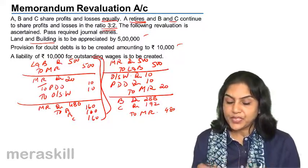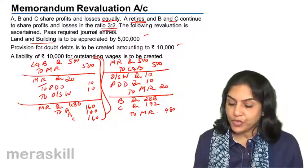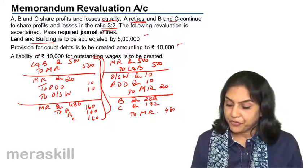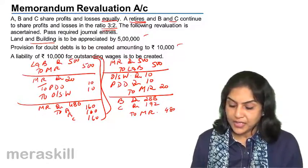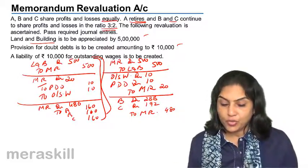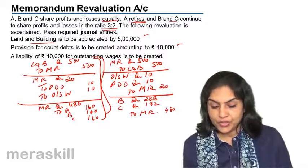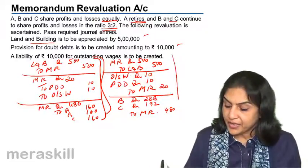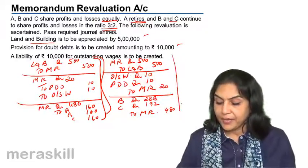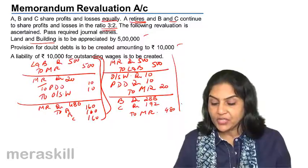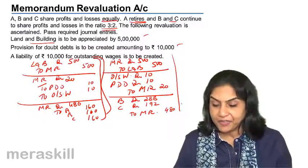With this, we see that the land and building value is offset, provision for doubtful debts and outstanding wages are all closed. We only have the net effect in B and C's accounts, and A has already left.